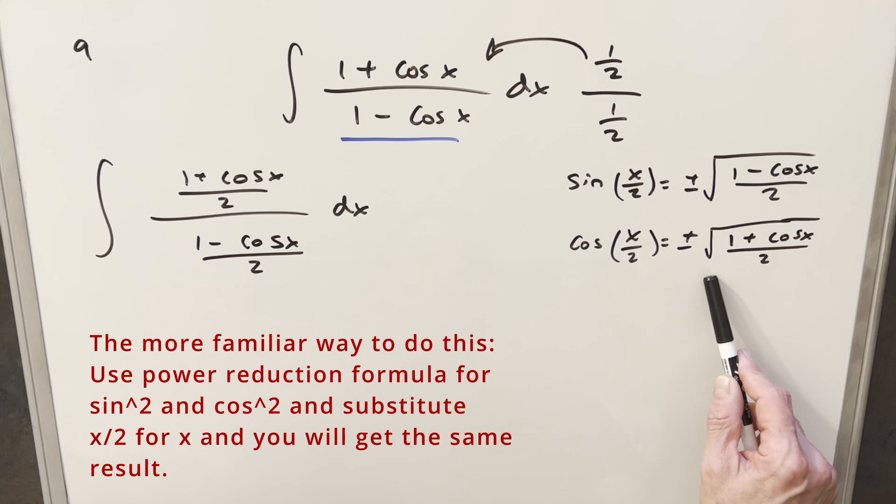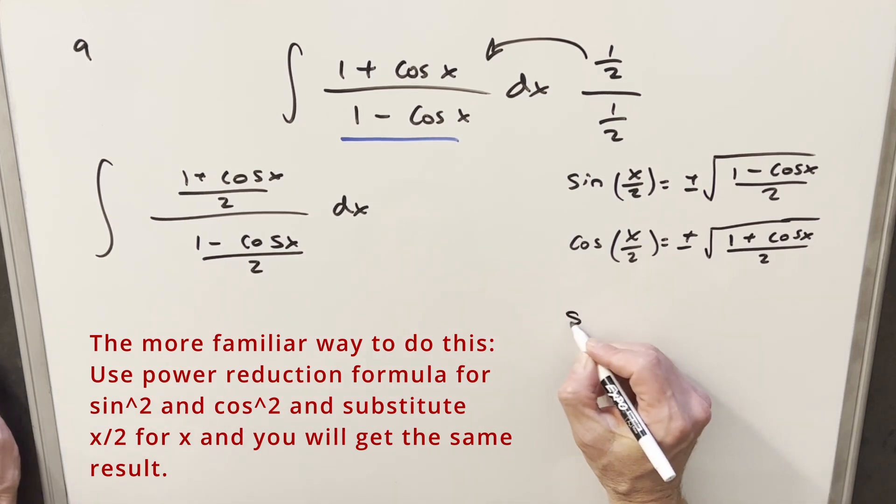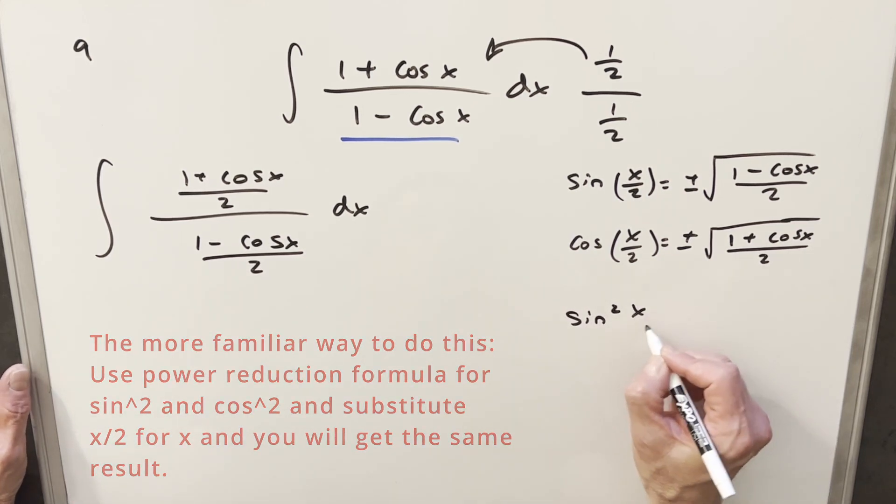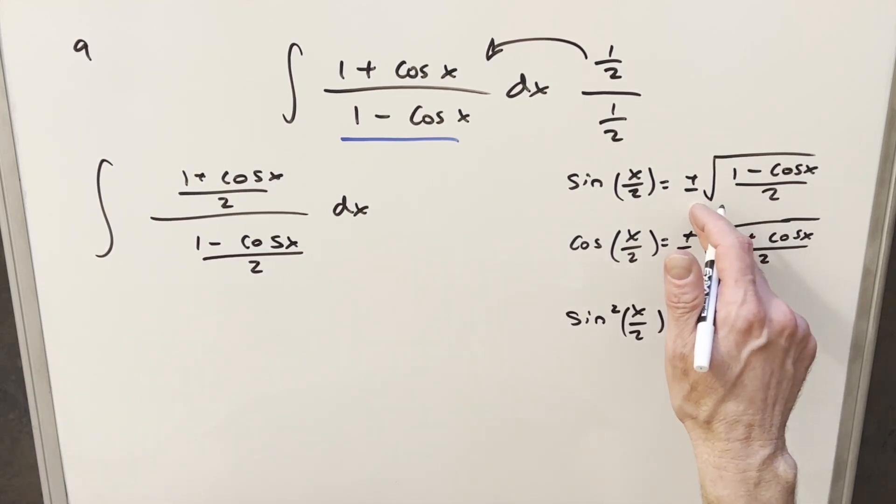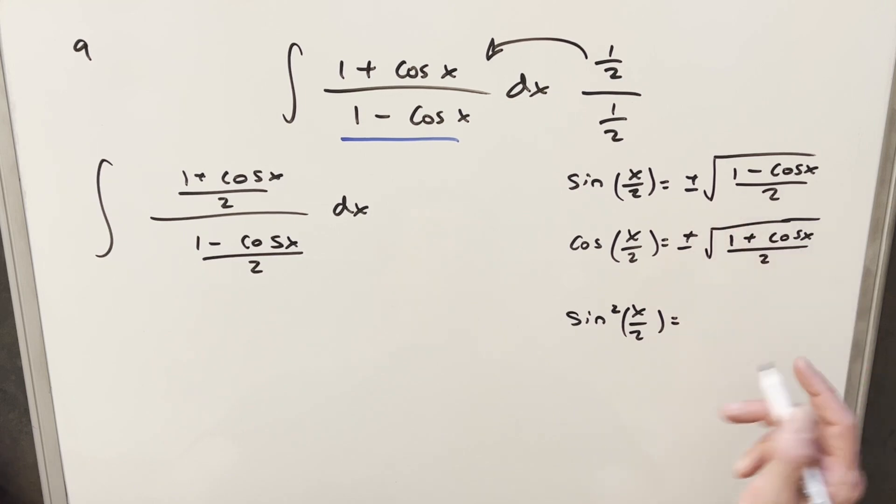The only thing is these formulas over here, we've got the radical. Well, that's going to be pretty easy to clear up because what I'll do is we'll just square both these. And then what's going to happen, the plus or minus, when I square it, the plus or minus isn't going to matter and the radical will go away.